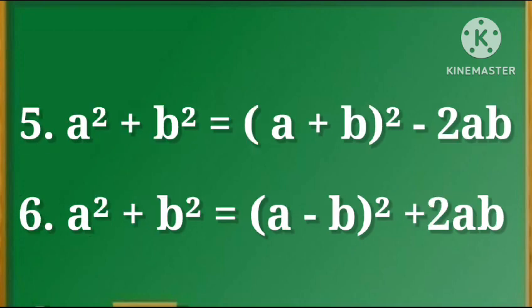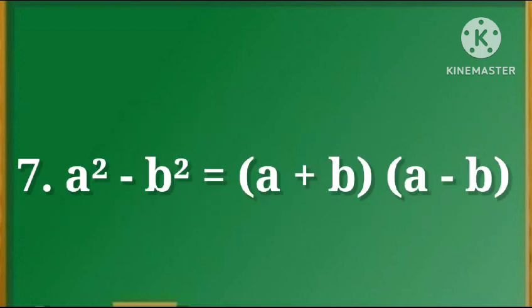5. a square plus b square is equal to (a plus b) whole square minus 2ab. 6. a square plus b square is equal to (a minus b) whole square plus 2ab. 7. a square minus b square is equal to (a plus b) into (a minus b).